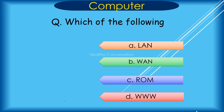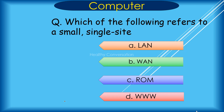Question: Which of the following refers to a small single site network? The options are: A. LAN, B. WAN, C. ROM, D. WWW. Correct answer is A. LAN.